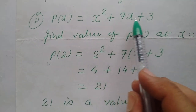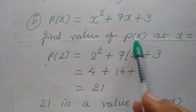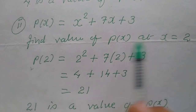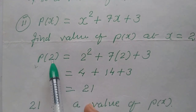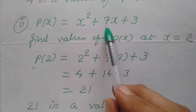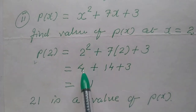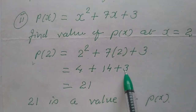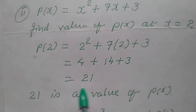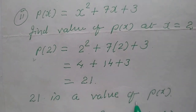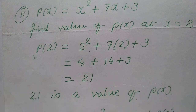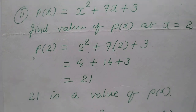Another example: p(x) equal to x squared plus 7x plus 3. Find the value of p(x) at x equal to 2. Replace x by 2: 2 squared plus 7 into 2 plus 3 equals 4 plus 14 plus 3 equals 21. So 21 is the value of p(x). Pause the video and note down this example in your notebook.